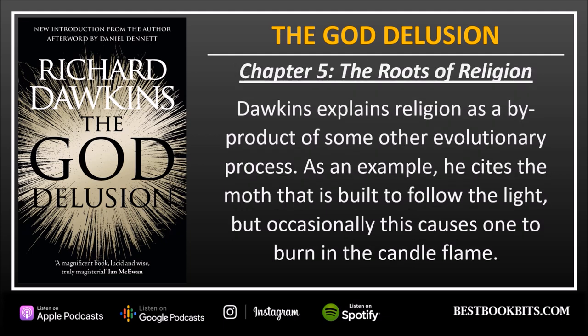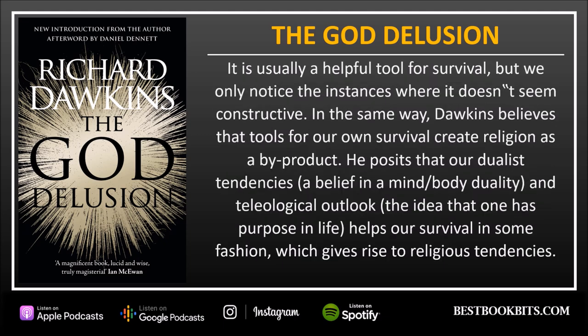Chapter 5: The Roots of Religion. Dawkins explains religion as a by-product of some other evolutionary process. As an example he cites the moth that is built to follow the light, but occasionally this causes it to burn in the candle flame — it is usually a helpful survival tool, but we only notice the instances where it doesn't seem constructive. In the same way, Dawkins believes that tools for our own survival create religion as a by-product. He postulates that our dualistic tendencies — belief in mind-body duality and a teleological outlook — help survival in some fashion, which gives rise to religious tendencies.